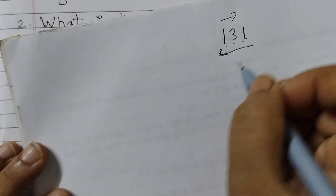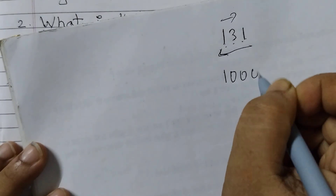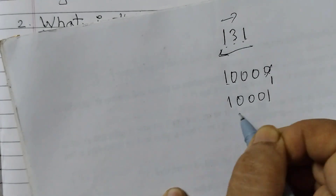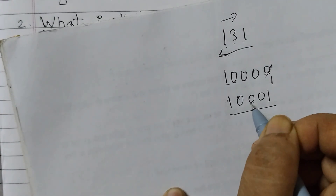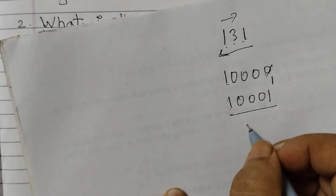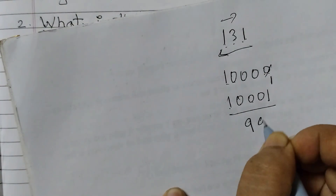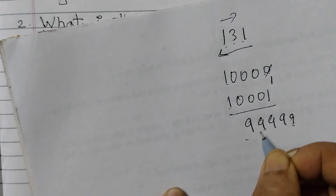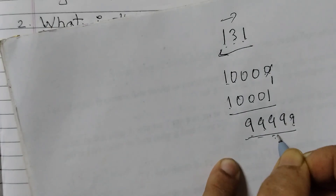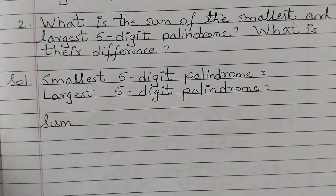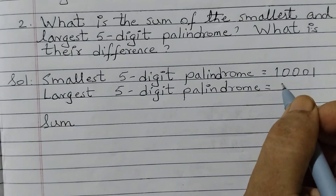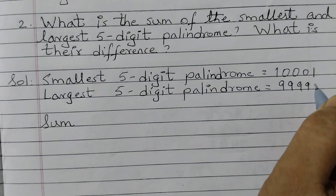The smallest five-digit number is 10,000, but this is not a palindrome. However, if I change the last digit to 1, like 1,0,0,0,1, this becomes a palindrome. For the largest one, the largest five-digit number is 99,999. From left to right and right to left it reads the same, so it's already a palindrome. So the smallest five-digit palindrome is 10,001 and the largest is 99,999.